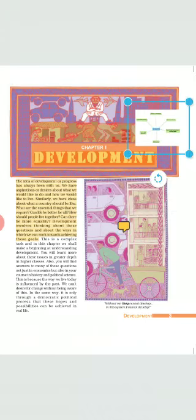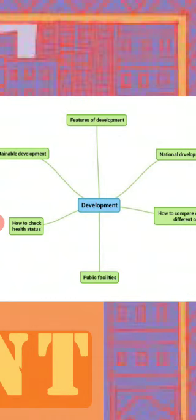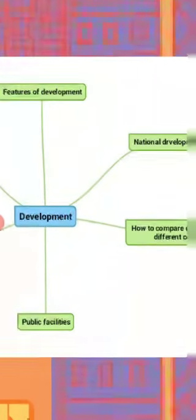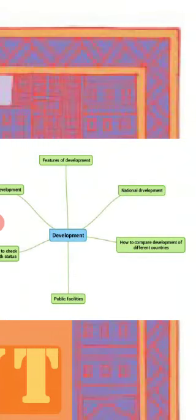Now look at this mind map. In this chapter, we will study these main topics. The first topic is features of development. The second topic is national development. The third topic is how to compare development of different countries — here we will discuss all the indicators used to compare development of different countries.